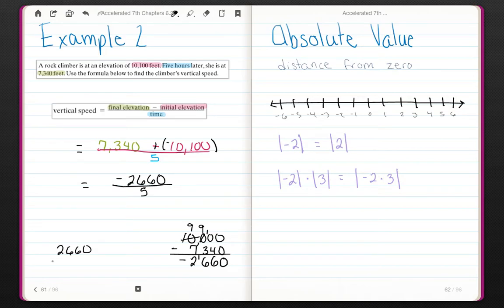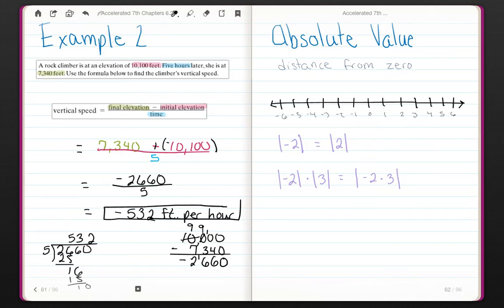So 2,660 divided by 5, 25, 16, 3, 15, 2. So I have a negative divided by a positive, therefore I'm going to have a negative 532 feet per hour. So every hour, she was averaging negative 532 feet, meaning she was climbing down the mountain 532 feet an hour.